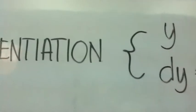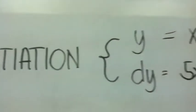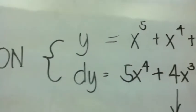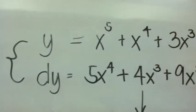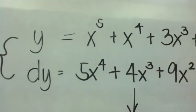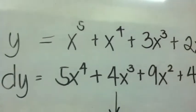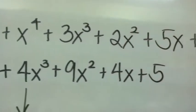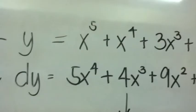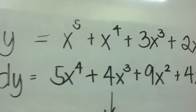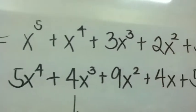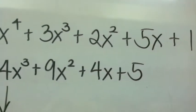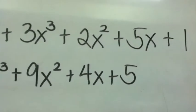In this example, where y is equal to x to the 5th plus x to the 4th plus 3x cubed plus 2x squared plus 5x plus 1, we know that the derivative would be 5x to the 4th plus 4x cubed plus 9x squared plus 4x plus 5.